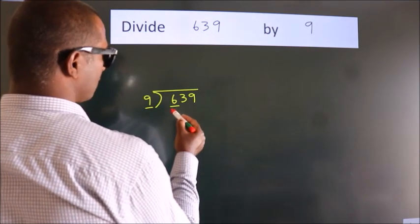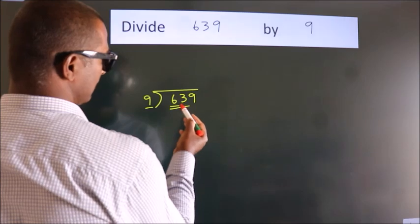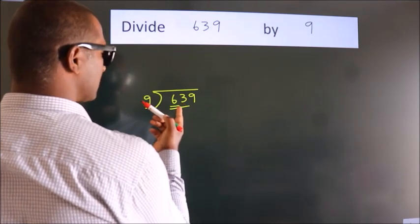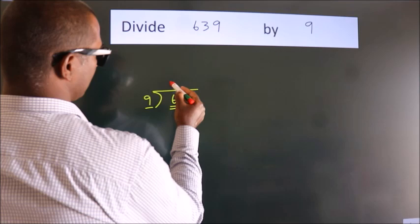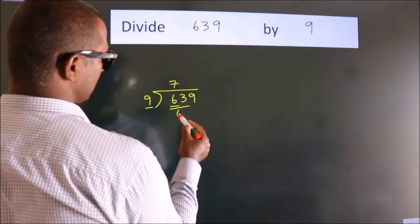So we should take two numbers: 63. When do we get 63 in the 9 table? 9 times 7 is 63.